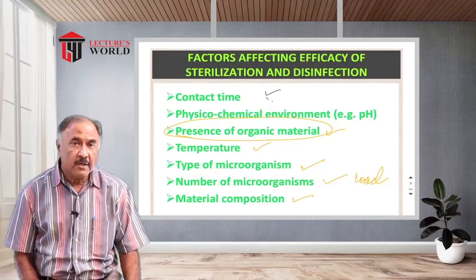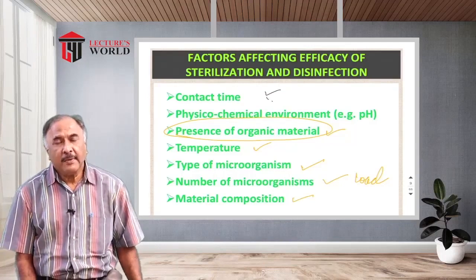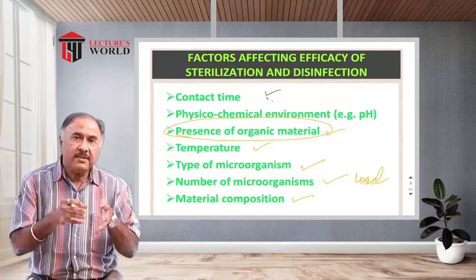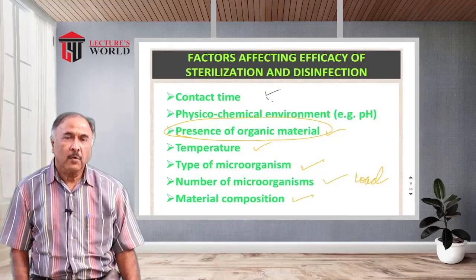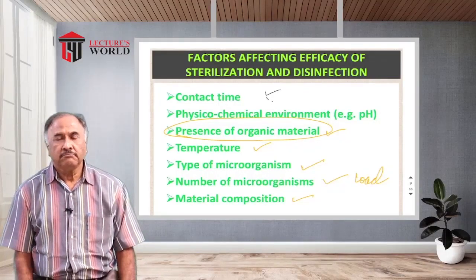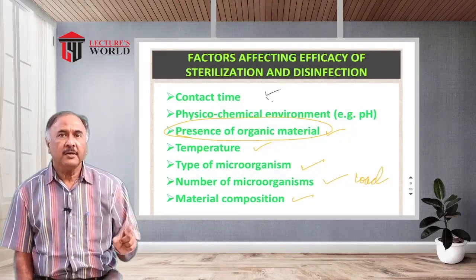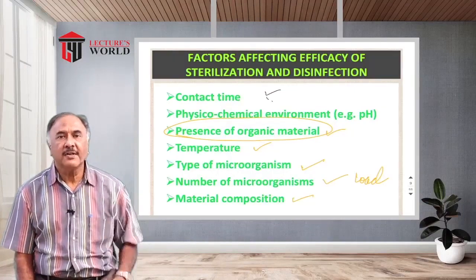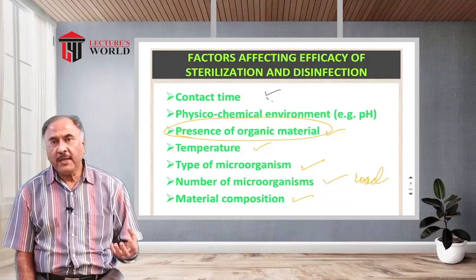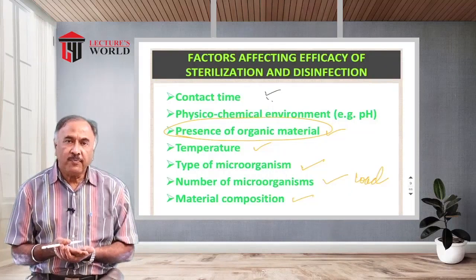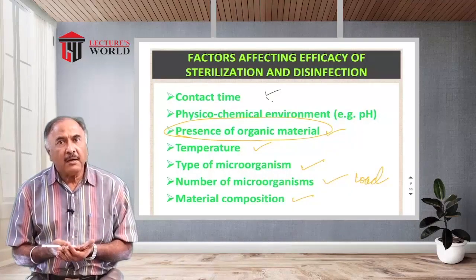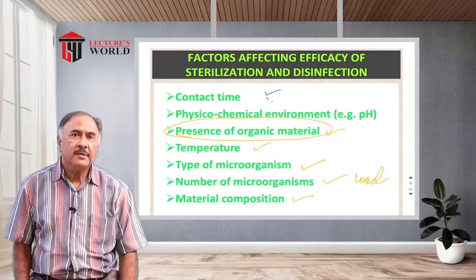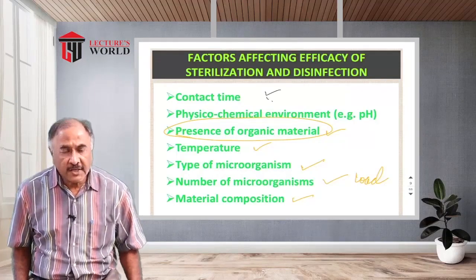Number of microorganisms, also known as the load, is another important factor — how many organisms are present in the material to be sterilized. Higher contamination means a higher microbial load, requiring higher concentration, more time, and higher temperature for sterilization. Finally, the composition of the material to be sterilized matters because the sterilizing agent — whether chemical or physical — must be able to penetrate the material. Surface treatment alone is not enough; the agent must reach the core of the material. Materials may be enclosed in polythene, paper, or cloth, which all affect the sterilization process.